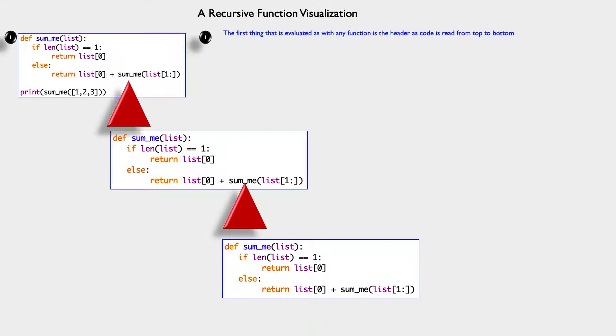So the first thing that happens is that the function's header is evaluated. The next thing that happens is the caller is evaluated and executed. Then the first branch of the if statement is evaluated and the condition in this case is not met.